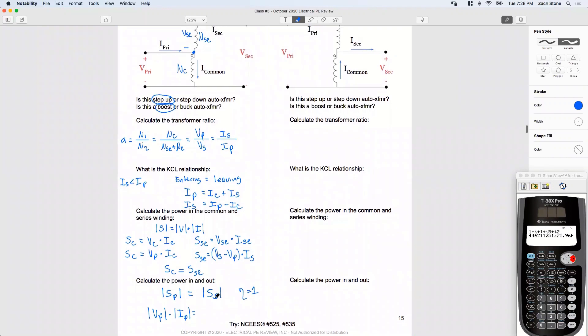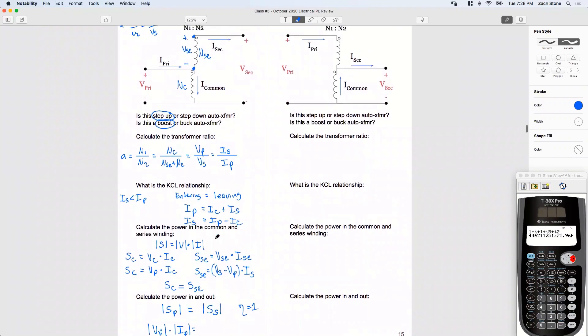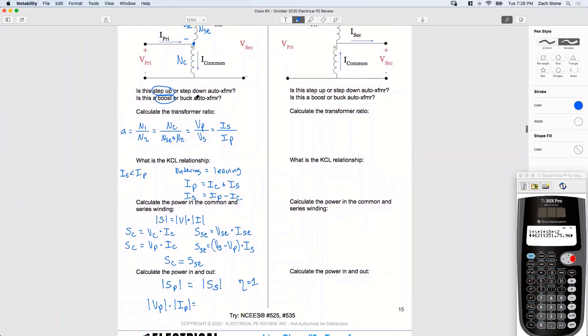The secondary power or the output power is going to be what? It's going to be V secondary times I secondary. So V secondary times I secondary. Be careful. Don't confuse subscript P. This is not phase. That's primary.